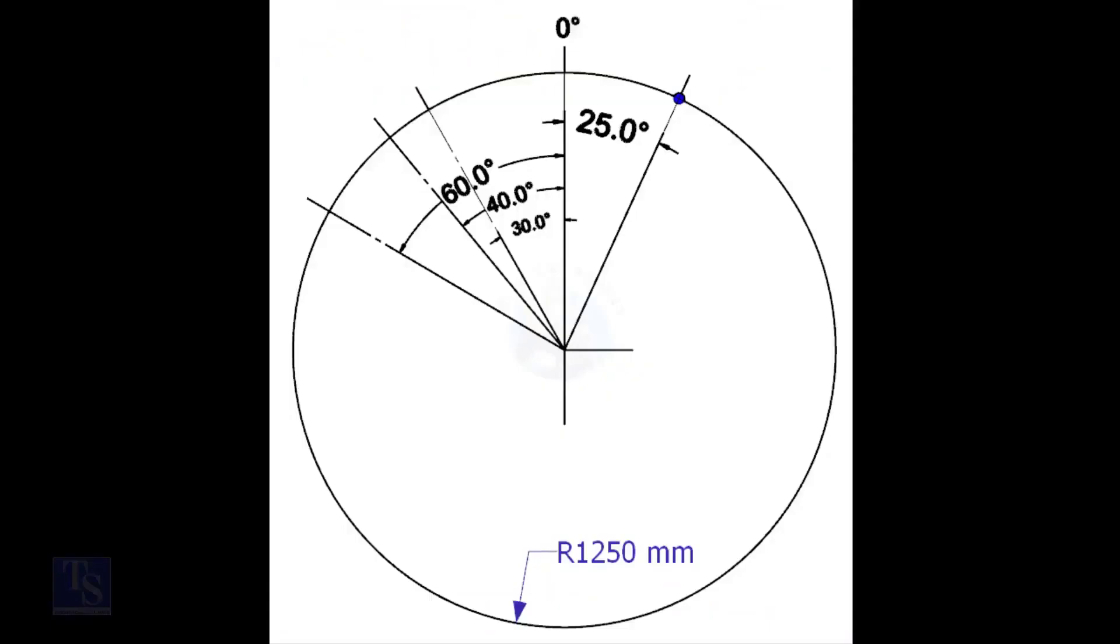Mark the zero degree line as per the drawing. Zero degree is rotated 25 degree anti-clockwise from the center of the weld joint.